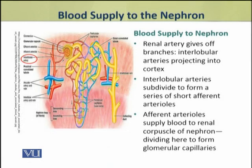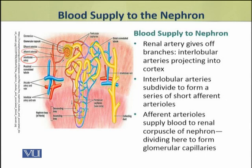Now we shall discuss the blood supply to the nephron, starting with the afferent pathway. The renal artery, which supplies blood to the kidney, gives off branches called the interlobular arteries, which project into the cortex. These interlobular arteries subdivide further to form a series of short afferent arterioles. These afferent arterioles supply blood to the renal corpuscle of each nephron.